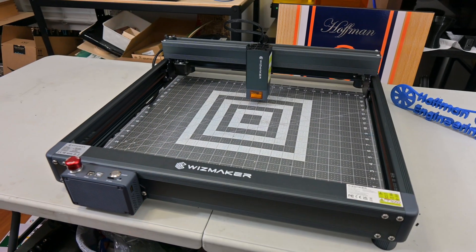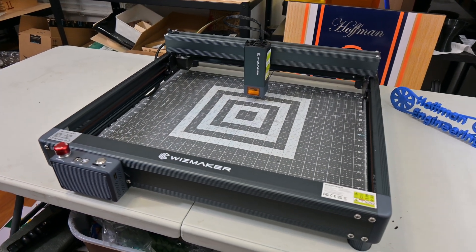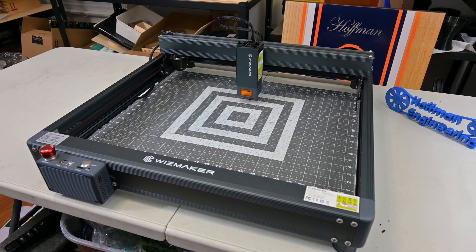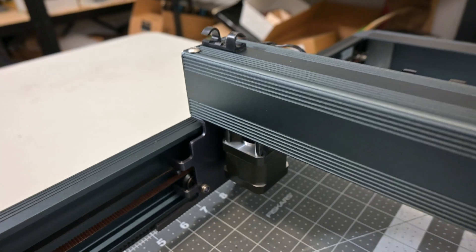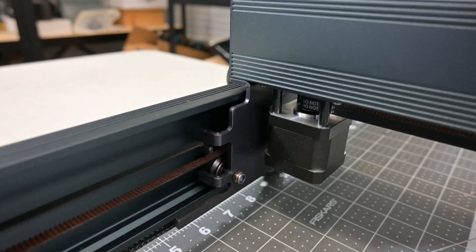The WizMaker L1 has an aluminum frame with nice rounded corners. The frame is very sturdy, and I like the appearance of it. The X and Y axes are belt driven, and there are end stop switches on one end of each axis to allow for homing.